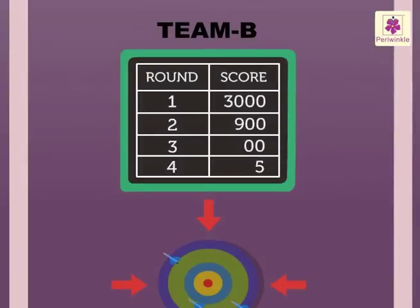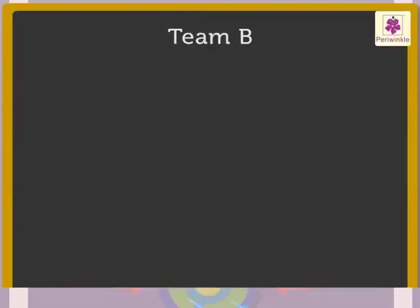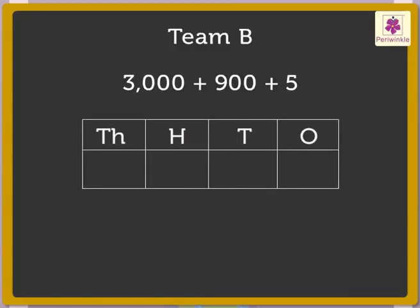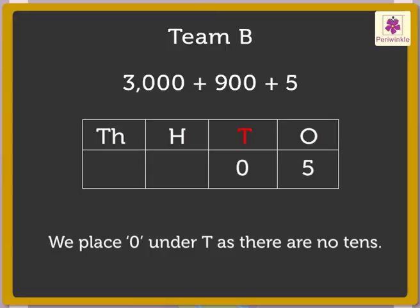Now let us look at the scores of Team B. Team B scored three thousand plus nine hundred plus five after four rounds. Here also we need to find the standard form to get the final score. First, write the numbers in the place value chart: five in the ones column. There are no tens, so we put zero in the tens column, nine in the hundreds column, and three in the thousands column.